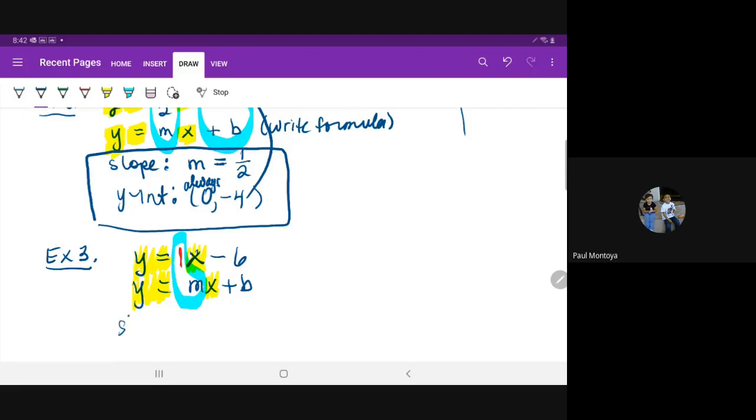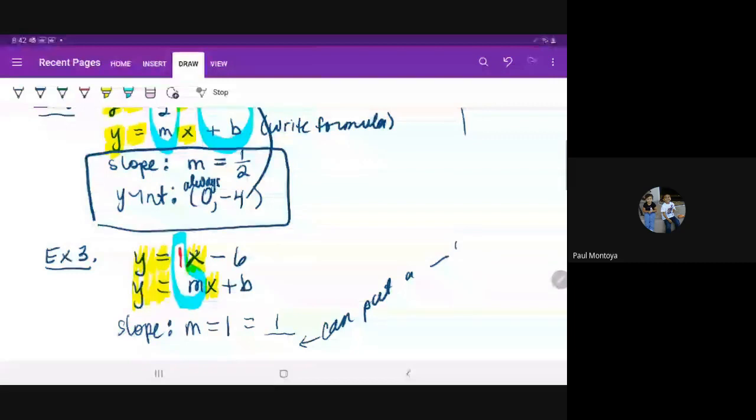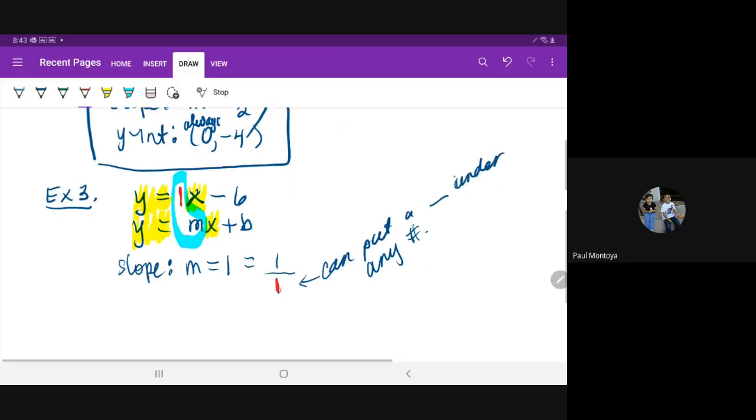Yes. A one is in the front of X. A one is in the front of X. Okay. So then you're going to write slope colon M equals one. But you have to make it a fraction. M has to be a fraction. So if you have a number, what can you put at the bottom? What can you put under any number? Exactly. So we're going to put a one under. Maybe we should put that in red. You know, like the number you put in the front.